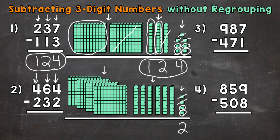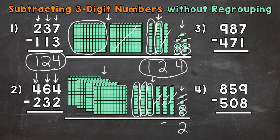Let's move to the tens place. So we have six tens minus three tens. Let's take away three tens: one, two, three. How many do we have left? One, two, three. So we put a three in the tens place in our answer.